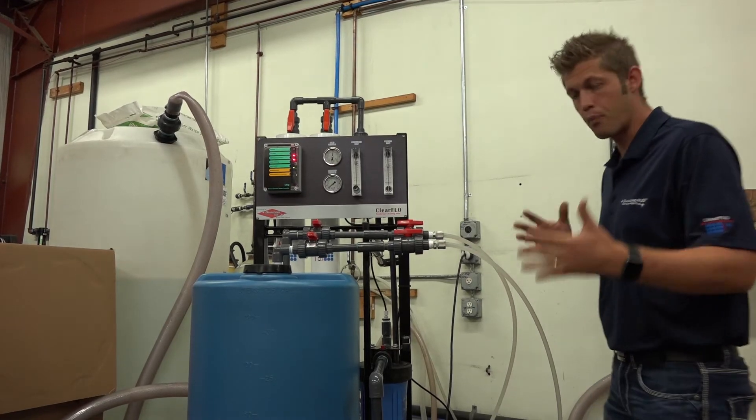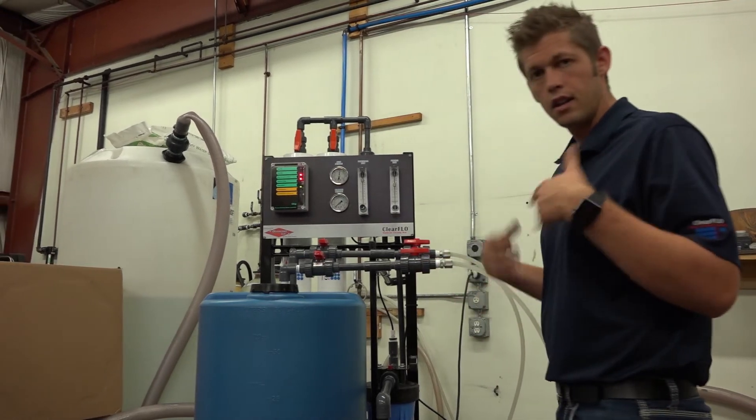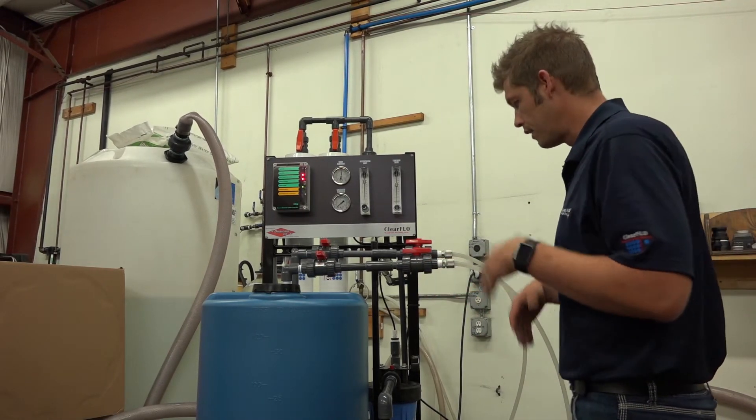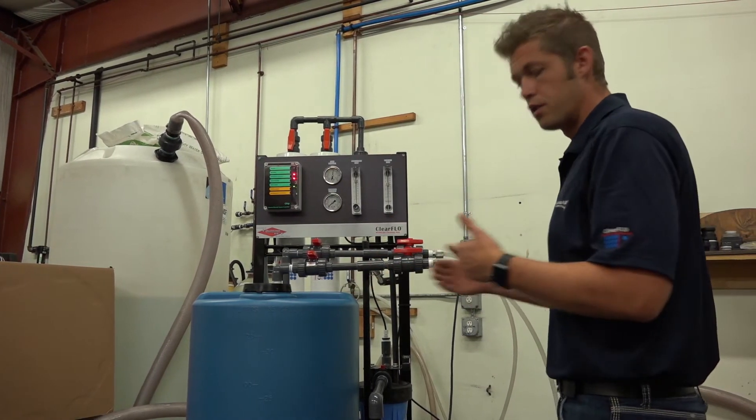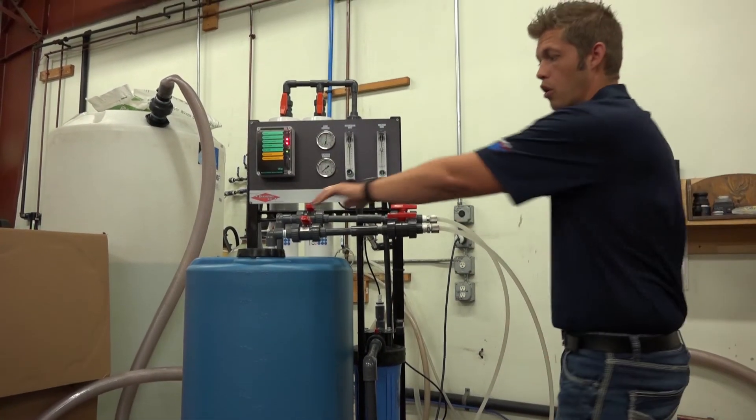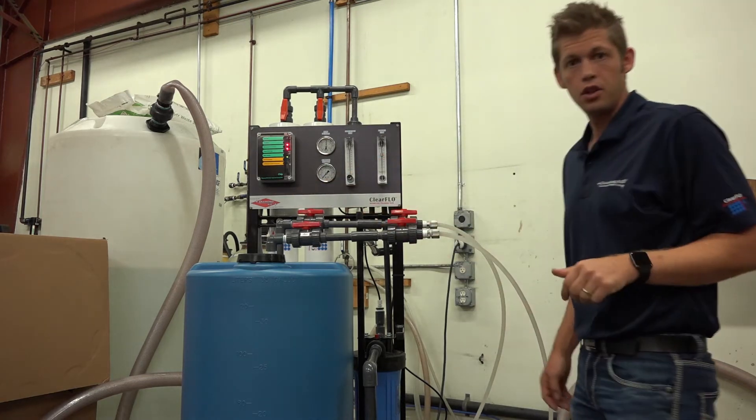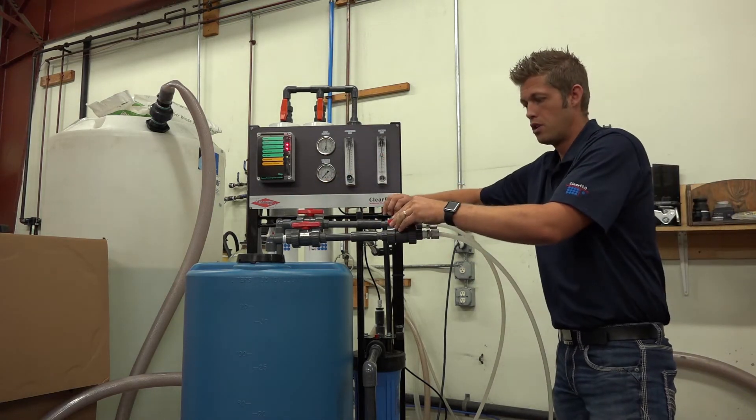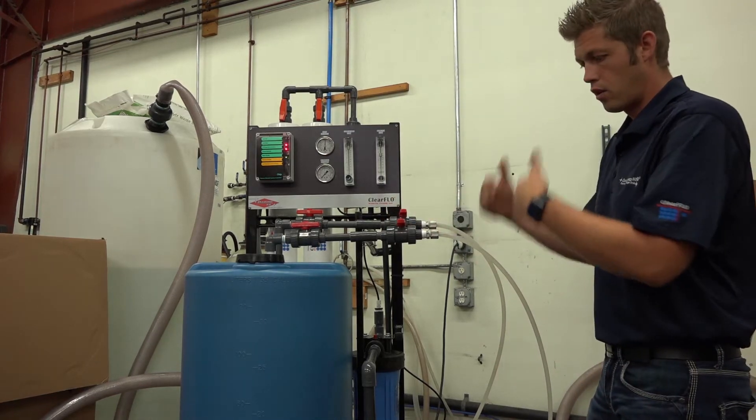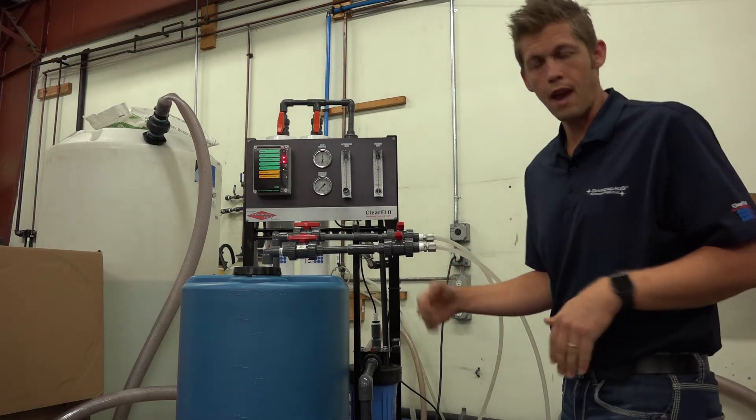So once you have the pump running, you have everything going. What you then can do, and this process can be relatively quick, is you can switch it over to the tank. In doing so, what you will do is you'll open your feed valves to the tank. You'll close off your drain. Once your drain is closed, you'll hear water going in. Again, you already have chemicals. There's no need to overly dilute it.